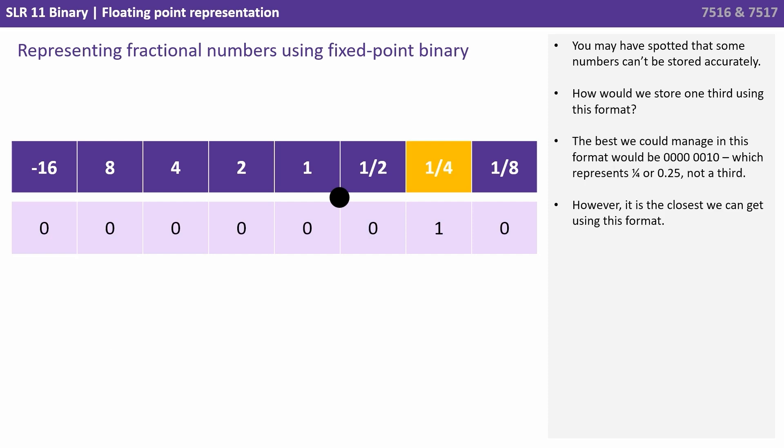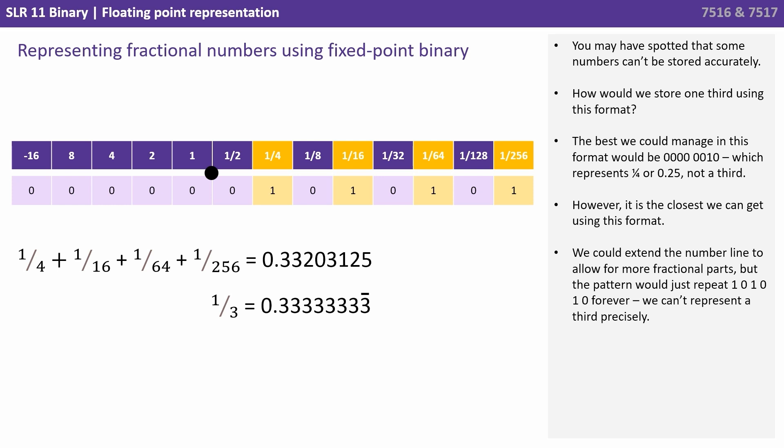Well, the best we could manage in this format would be 0000 0010, which represents a quarter 0.25, which is not a third. However, it's the closest we can get using the format we've been given. We could extend the number line to allow for more fractional parts, but the pattern would just repeat 101010 forever. We actually can't represent a third precisely.